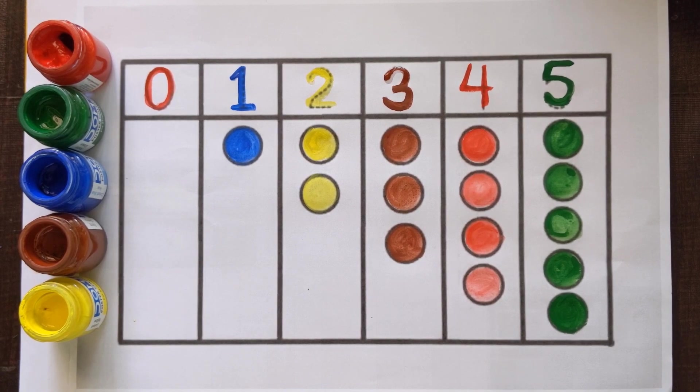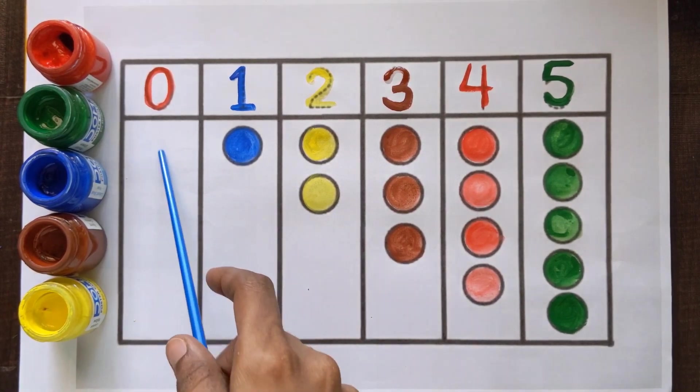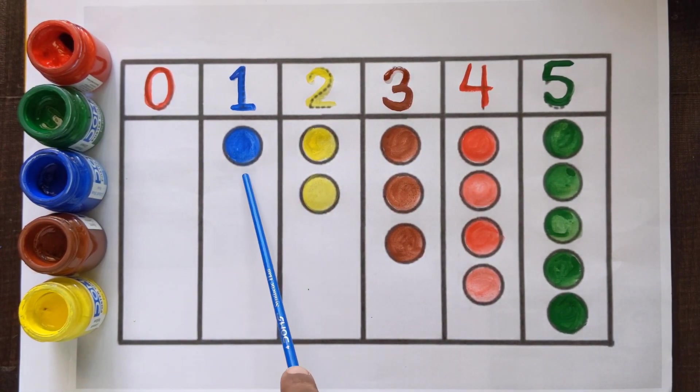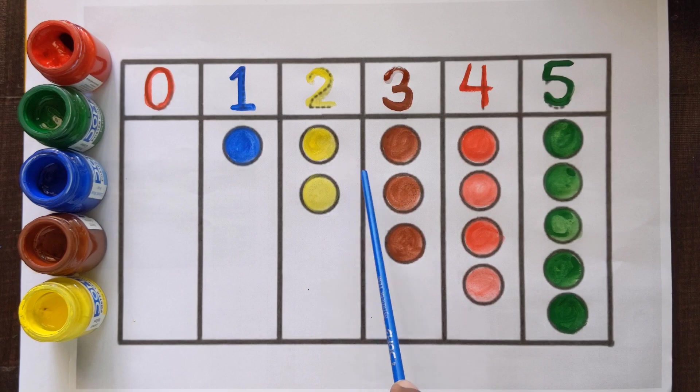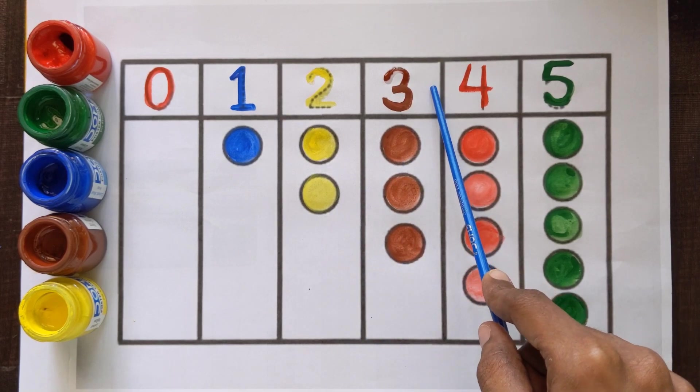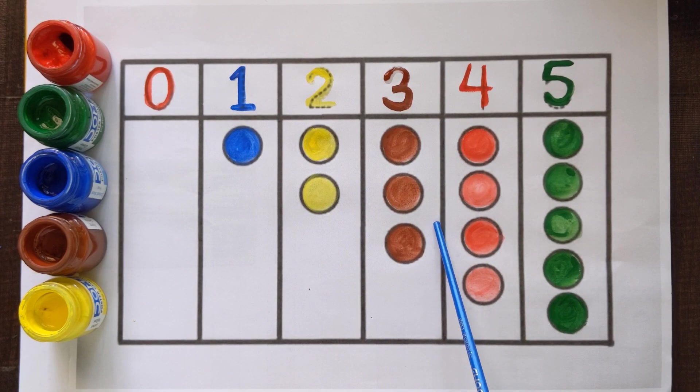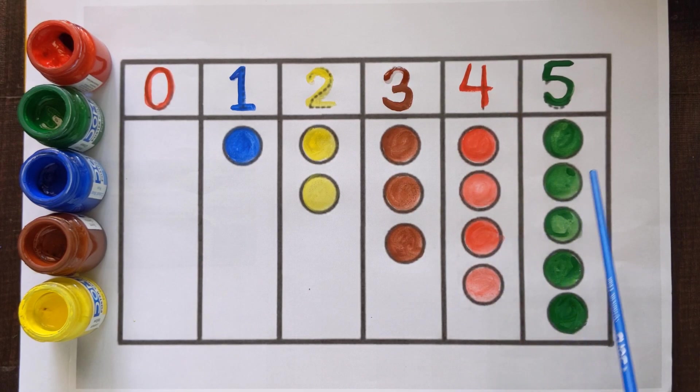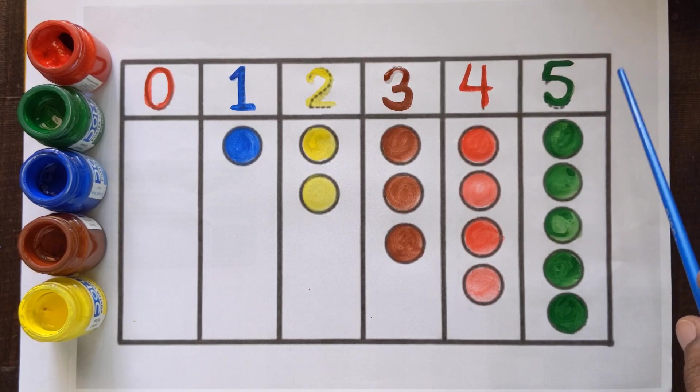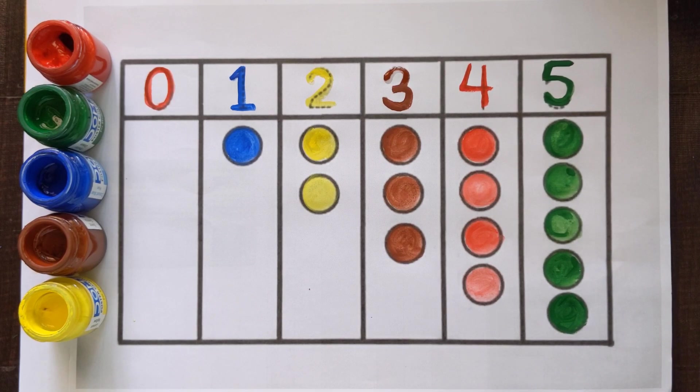Let's revise with me. 0, 0 means nothing. 1, 1 color ball with a blue color. Number 2, 2 color balls with a yellow color. Number 3, 3 color balls with a brown color. 4, 4 color balls with a red color. And number 5, 5 color balls with a green color.